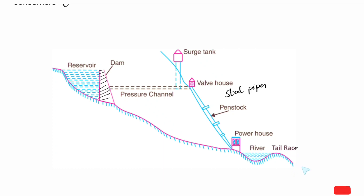The water flow is controlled, stored, and used for power generation. The same water can also be used for irrigation. The two important components are the surge tank and the penstock. The penstock is the pipe used to carry water flow to the turbine.